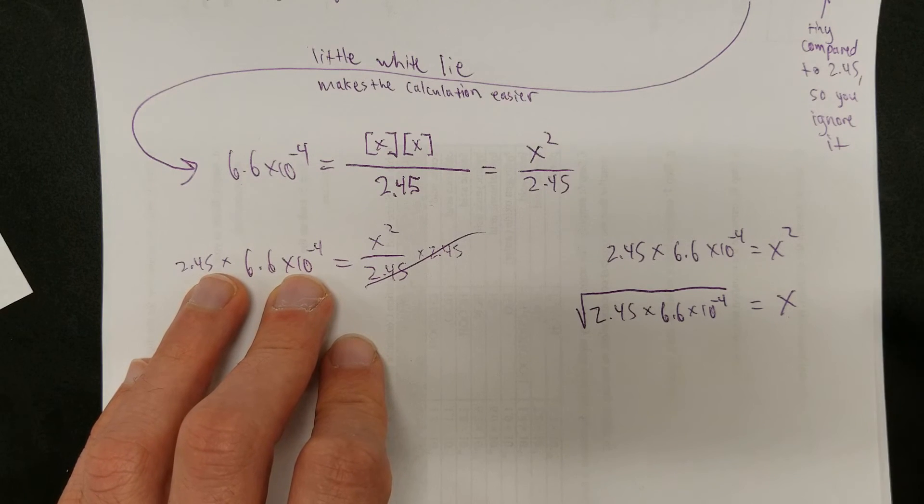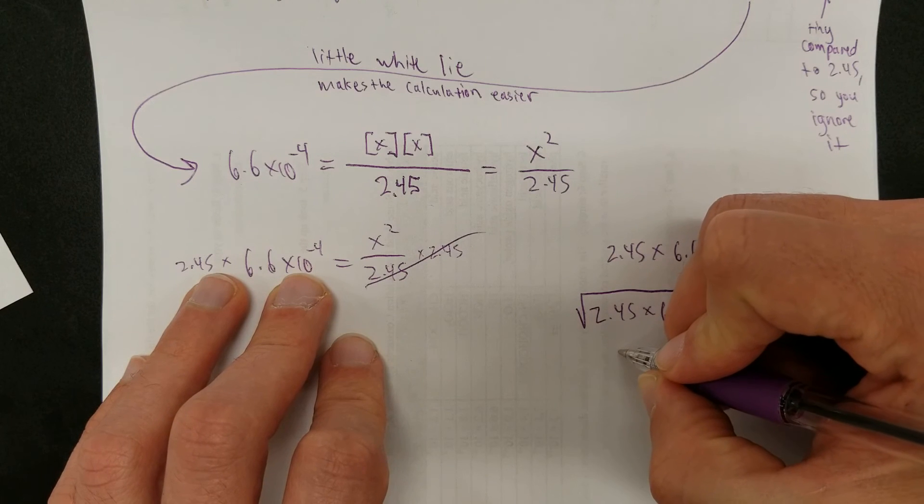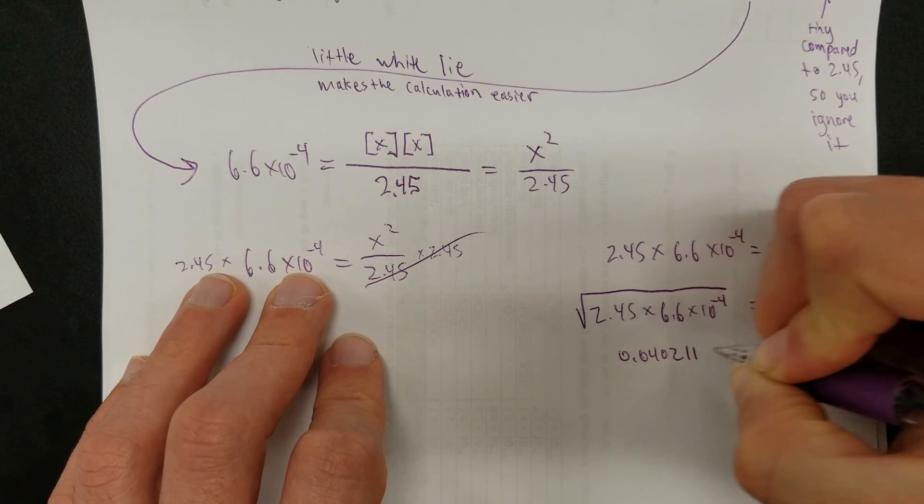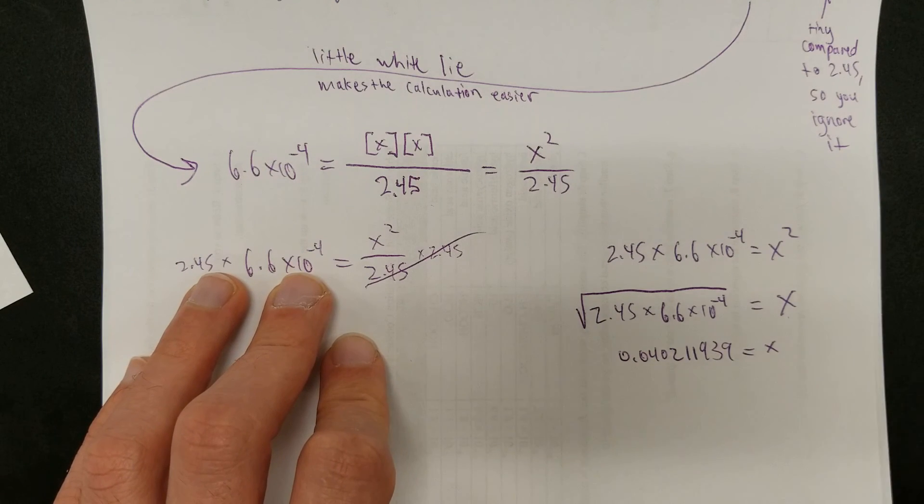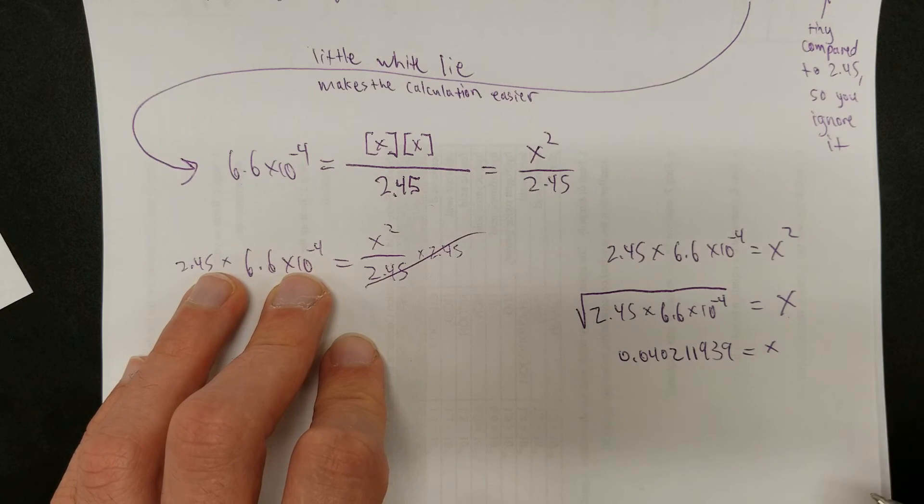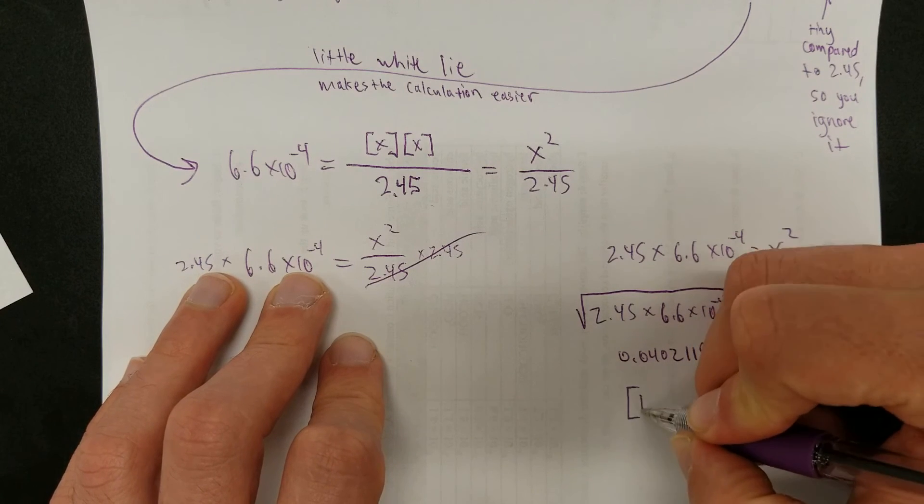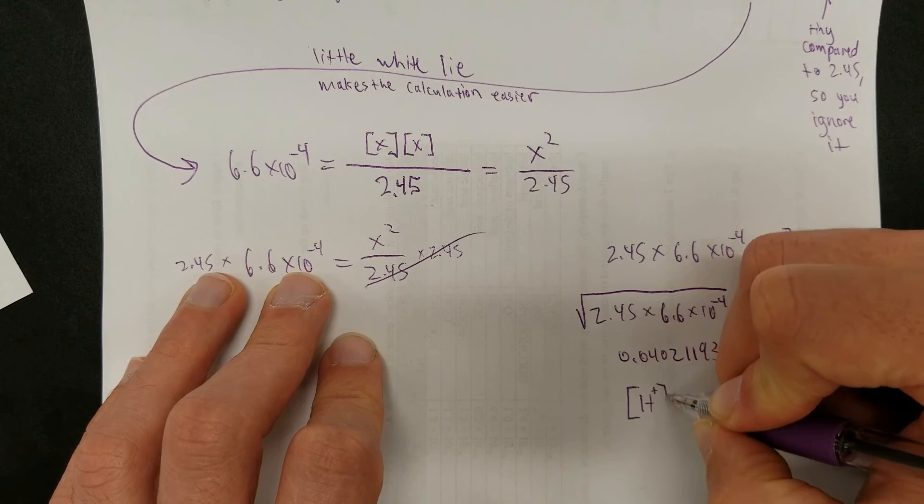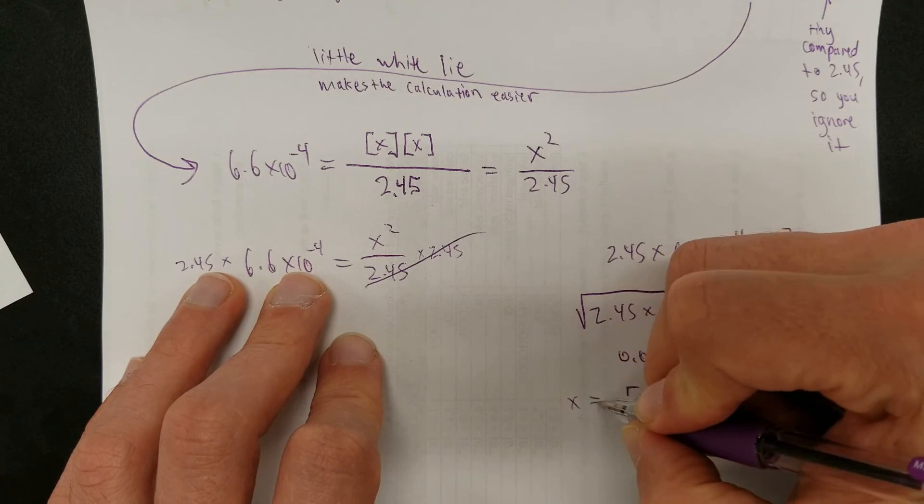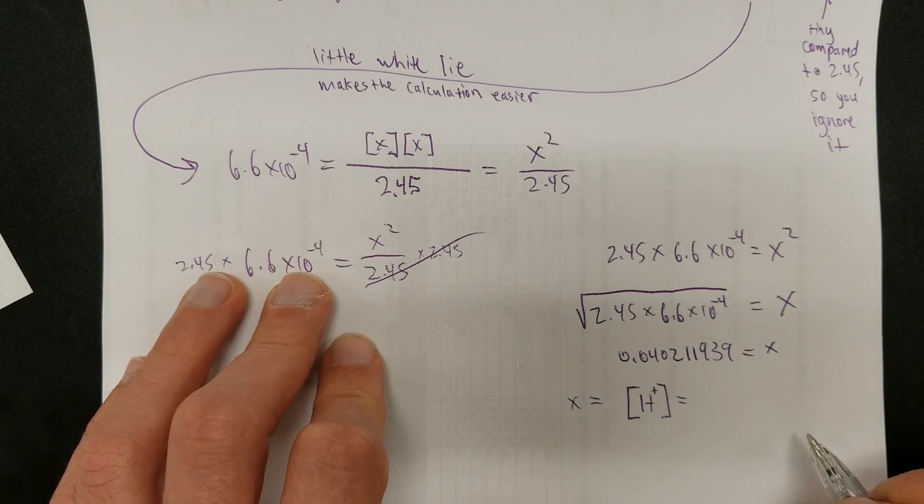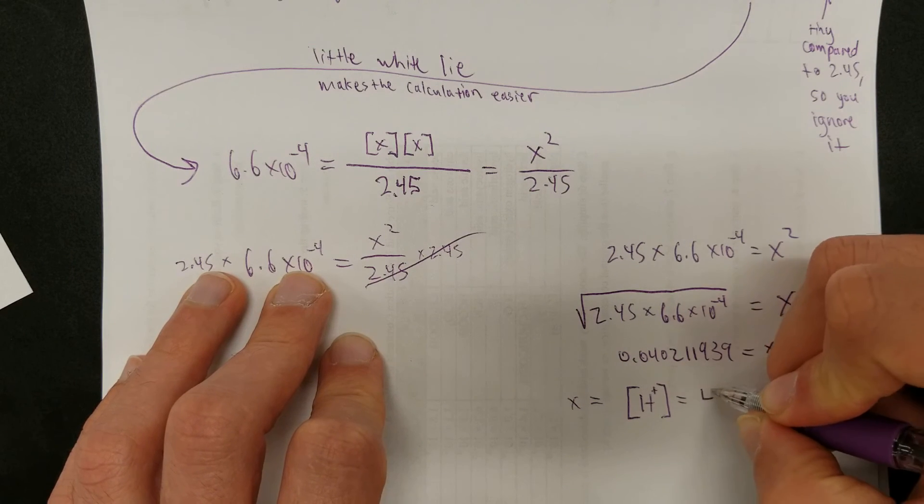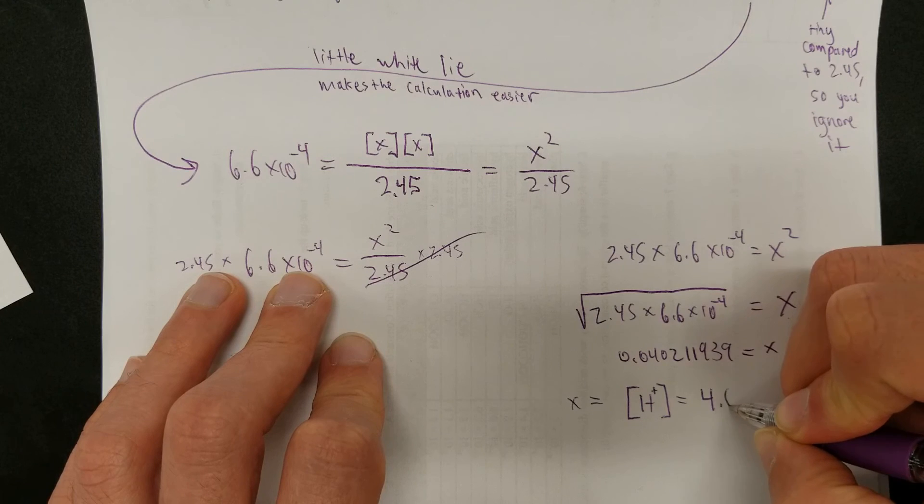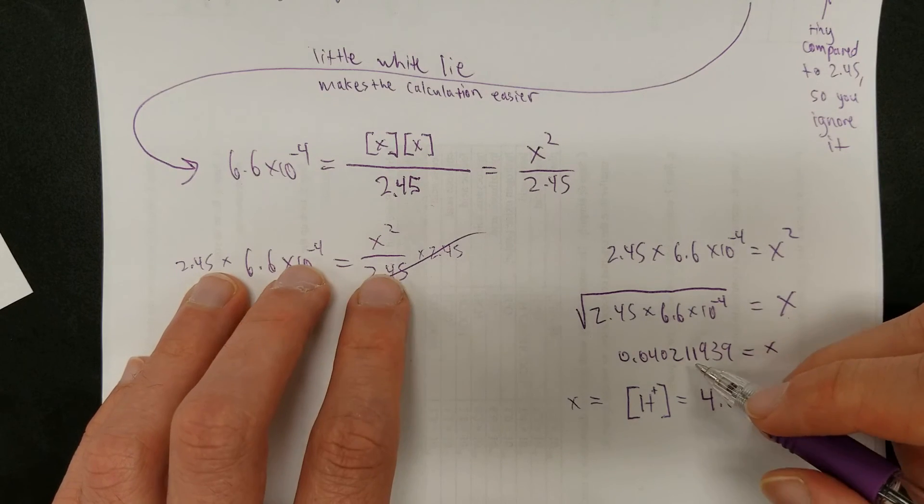So, we do the math, and it comes out to what the raw calculator output is: 0.040211939 equals X. And there's probably more. That's just what the calculator could fit on its screen. So, let's write this properly now. Hydrogen ion concentration is equal to X. So, X equals the hydrogen ion concentration. Wait, how far do we go? Keep in mind,